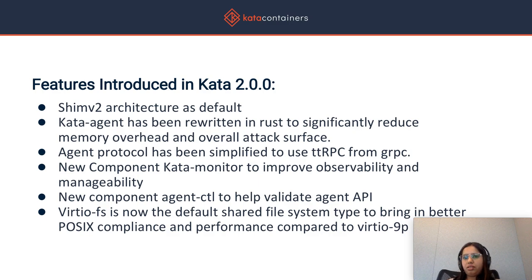Let's take a look at the major changes that went into Kata 2.0. The most important architectural change was the Shim V2 architecture. The Kata agent, which runs inside the VM and handles all sandbox and container lifecycle management within the VM, was rewritten in Rust. This rewrite from Golang to Rust gave us significant reductions in memory overhead and reduced the overall attack surface as well.